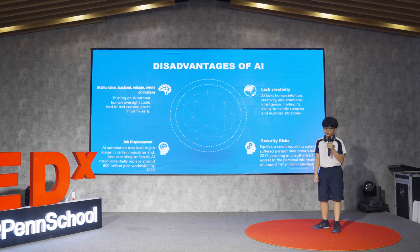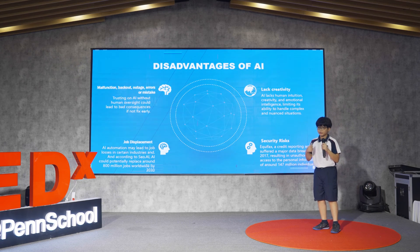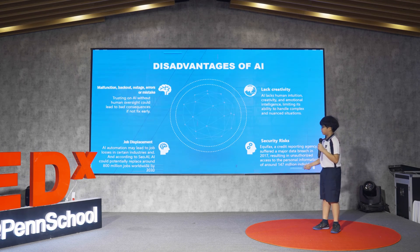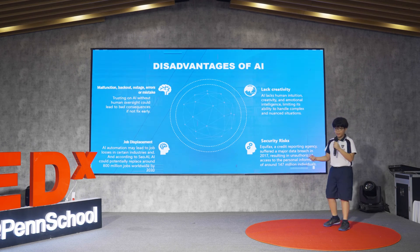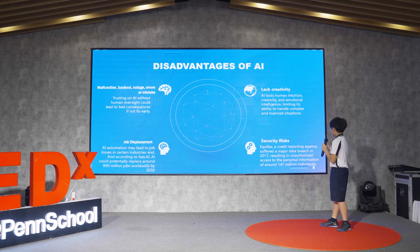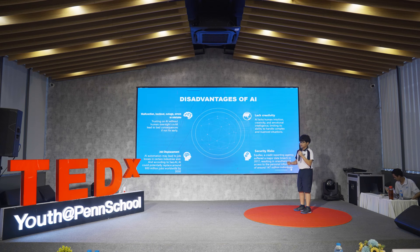AI lacks human intuition and creativity because it has no emotions — if you want to write a heartfelt message to your mom, you cannot let AI write it because AI doesn't know what you're feeling. Job displacement is another concern: AI automation may lead to job losses in certain industries, which could lead to poverty in some countries. According to projections, AI could potentially replace around 800 million jobs worldwide by 2030. Security risk: Equifax, a company using AI to protect their agency, suffered a major data breach in 2017, exposing data of 147 million individuals — because they were not checking on the AI enough, and trusting AI without human oversight led to bad consequences.